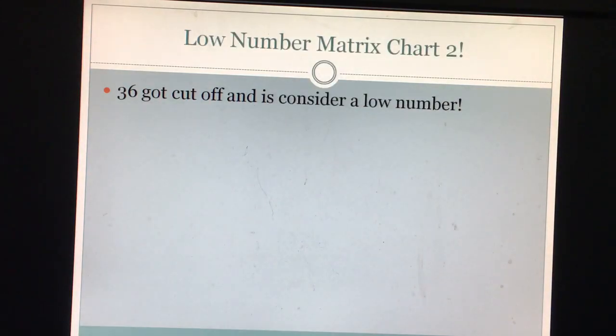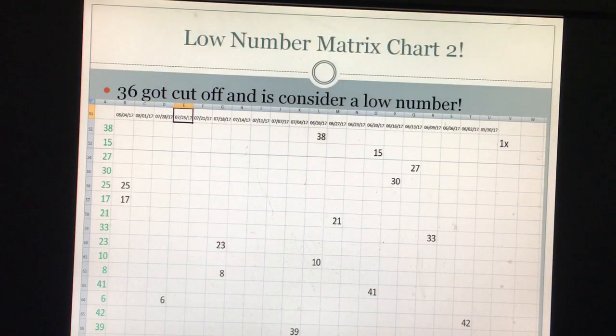And your known number matrix chart 2 are as follows. And take a look at it. 36 was all the way in the last line. 38, 59, it's considered a low number which got cut off. And the rest of the known numbers are 38, 15, 27, 30, 25, 17, 21, 33, 23, 10, 8, 41, 6, 42, and 39. There's just roughly about 40% of known numbers.